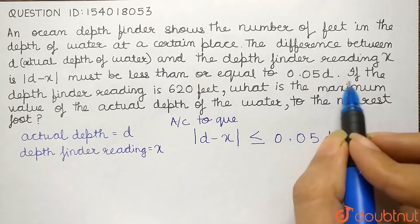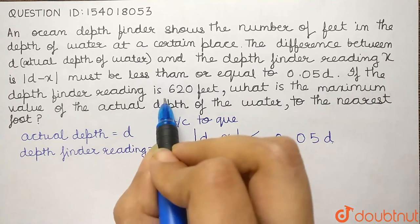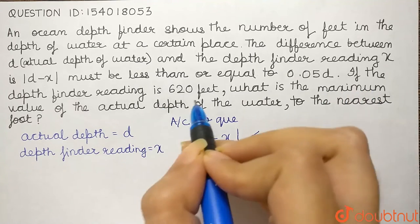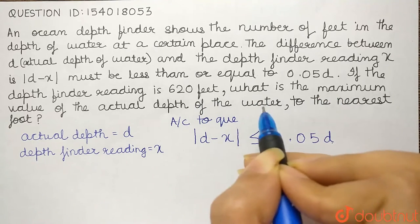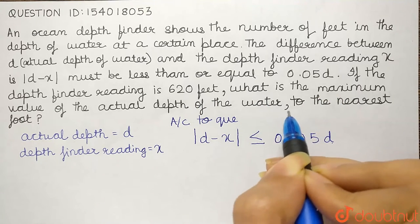Further, the question mentions, if the depth finder reading, that is X, is 620 feet, what will be the maximum value of actual depth of water, that is D?